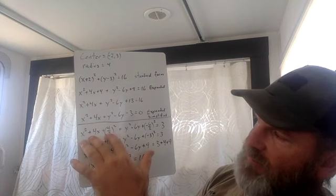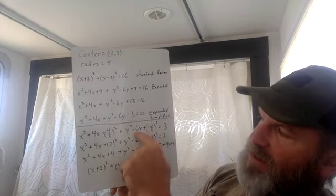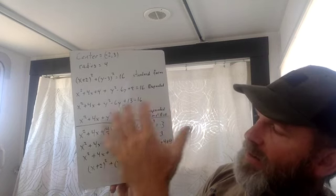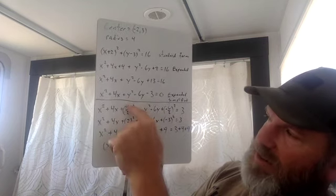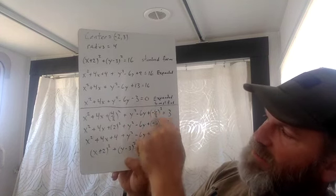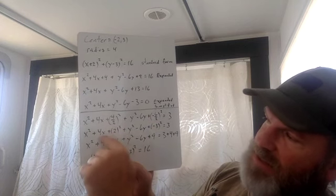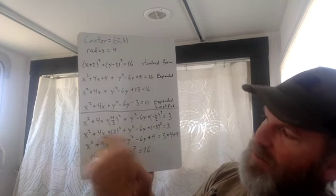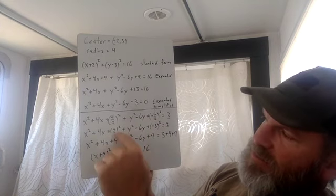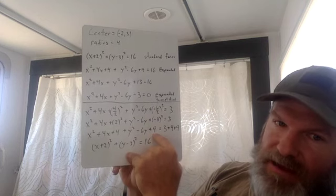Complete the square for the x's: take half of four and square it. For the y's, take half of negative six — negative six divided by two — and square it. Before squaring, simplify the fraction: four over two is two, negative six over two is negative three. Those are half of your b terms. Two squared is four, and negative three squared is nine.